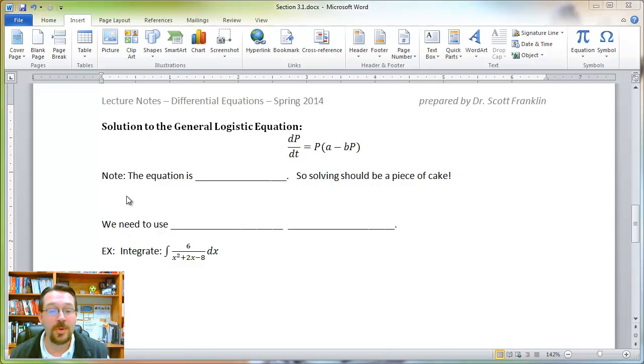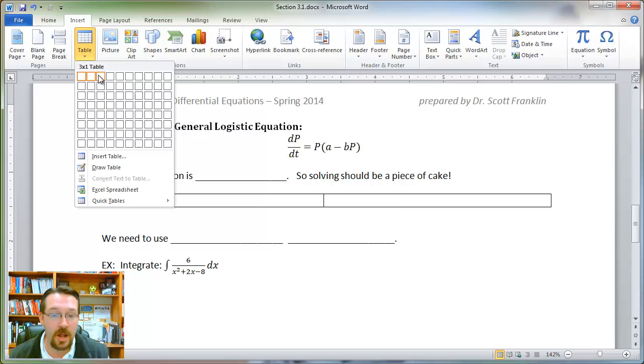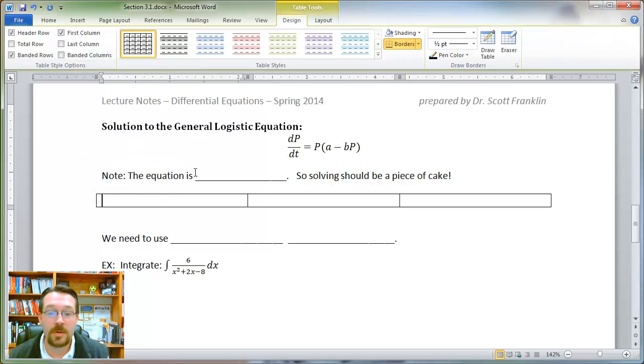So begin by going to a document where you want to insert an equation that will be numbered. I'm going to insert a table with three columns, one row, and then I'm going to adjust the column width for my first and my last column to be about half an inch. I want them the same on each side, so the equation in the middle will be centered.